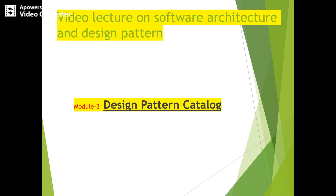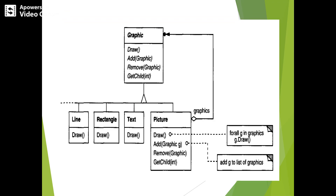Hello everyone, welcome to this video lecture on software architecture and design patterns. Today we are going to discuss the third module: Design Pattern Catalog. This is the diagrammatical representation of the composite motivational example, for which we have taken graphics.